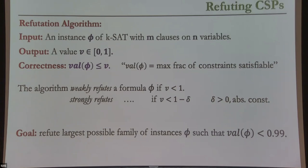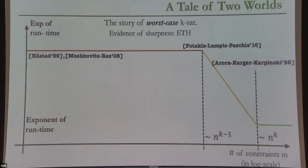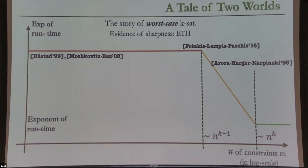Let's start with the story of worst case — mostly a summary of things you already know, but it places the average-case complexity in the right context. To understand this plot: if you take a refutation task and increase the number of constraints in the input formula, intuitively the task should get easier. You're adding more constraints, so the fact that no assignment can satisfy all of them should become easier to spot. So increasing the number of constraints should make the problem easier.